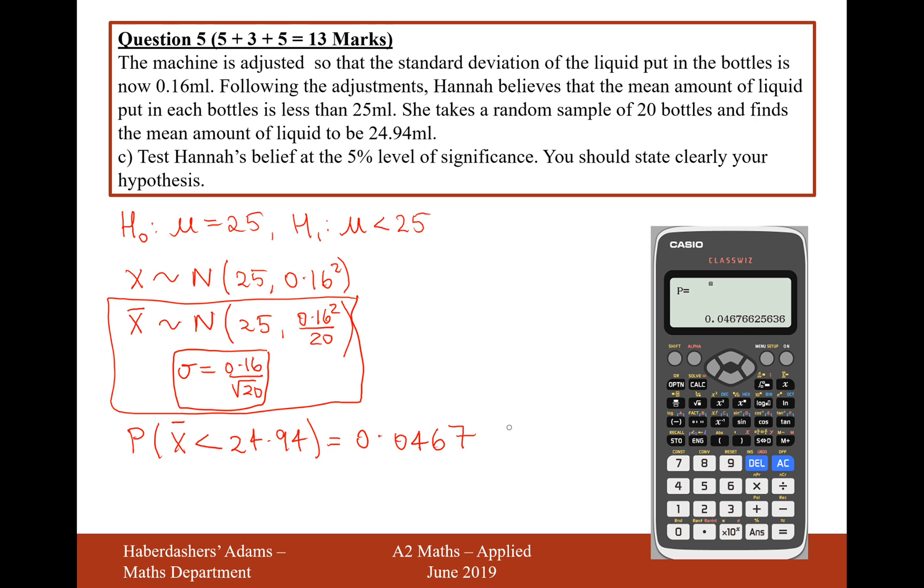So when we compare it with 0.05, we can see that this is lower than a 5% probability. So therefore, this is enough evidence to reject the null hypothesis and suggest that the mean has now decreased. So we need to write something down to that effect. So there we are. That's our answer to question 5. And that's 13 marks in total there. Let's now move on to question 6.